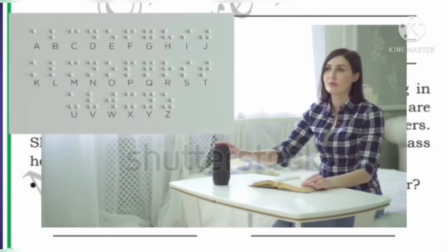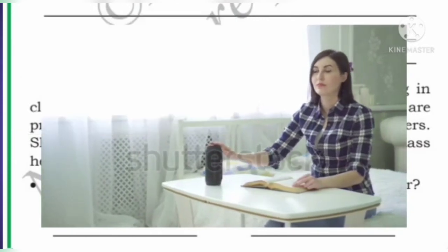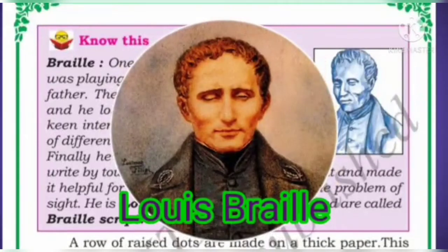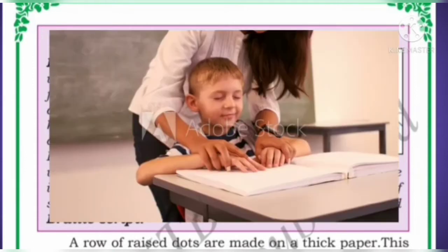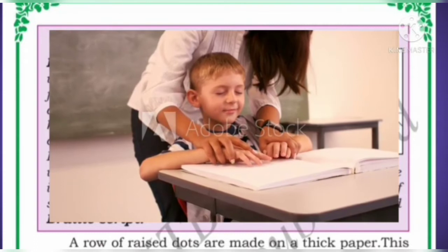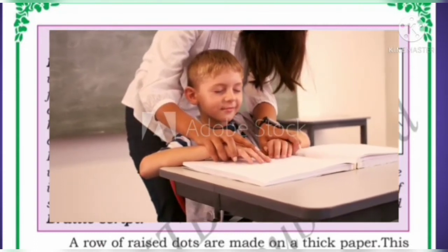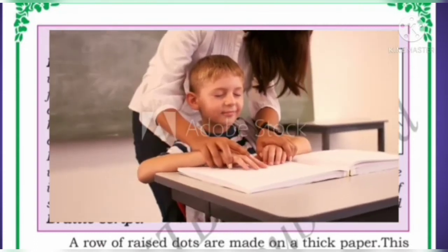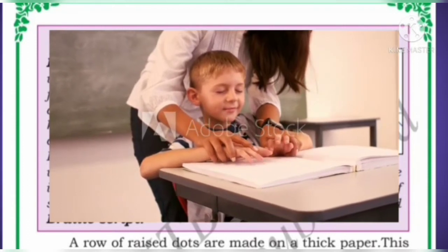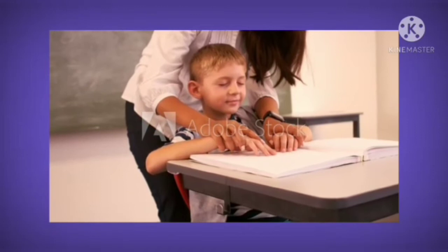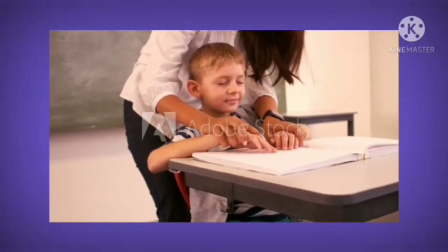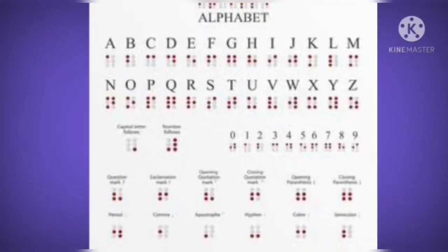This script was discovered by a blind person called Louis Braille. He met with an accident at the age of three and lost his eyesight. He had a keen interest in studies and tried different possibilities to read and write. Finally he arrived at a way to read and write by touching and feeling, and thus Braille script originated.